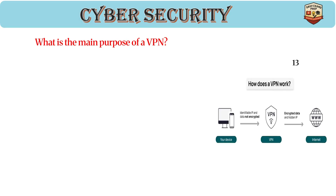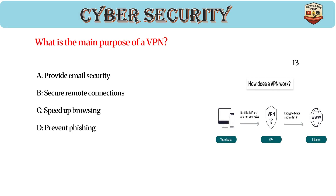What is the main purpose of a VPN? Answer: B, secure remote connections. A VPN creates an encrypted tunnel for traffic, protects data on public networks, and is commonly used for remote work.